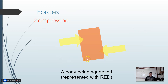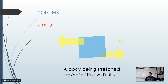When we talk about forces on trusses, there are two types. Compression, which we represent with the color red or orange, is an inward force — like being compressed. Tension, which we represent with blue, is when forces are pulling away from our members.